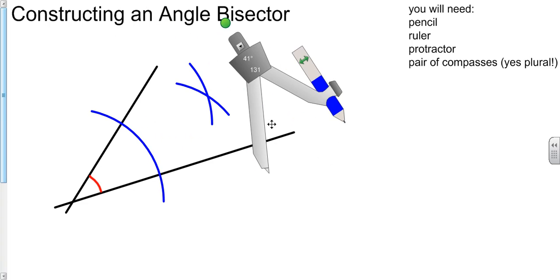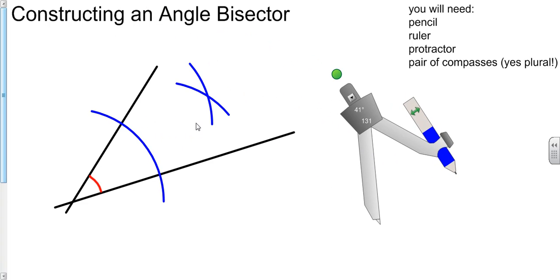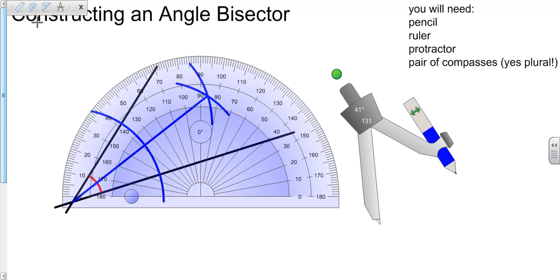That is halfway between the two lines and allows us to draw a line through that point down to the intersection of the two lines. That should give us the angle split in two. Let's find out if it does.